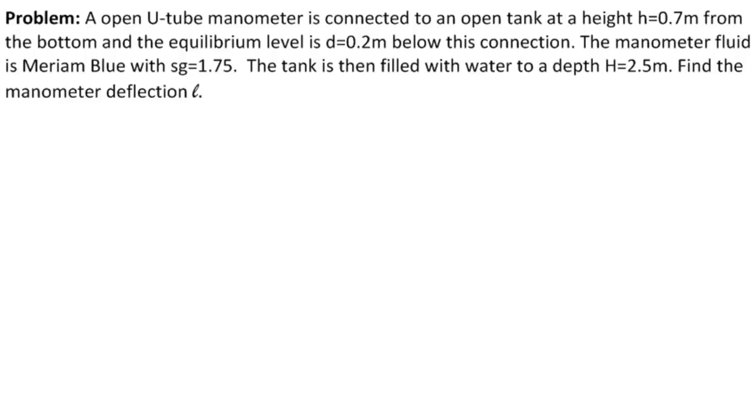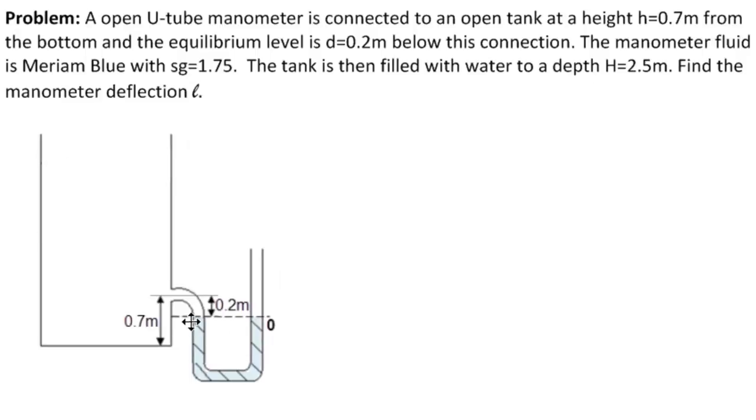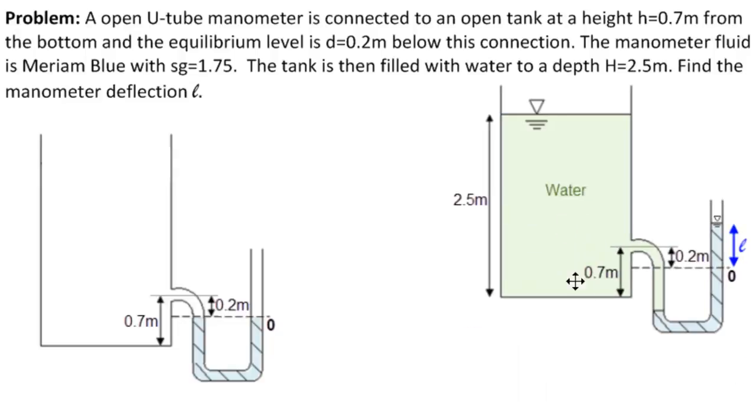So we start with an open tank and a U-tube manometer connected h equal to 0.7 meters from the bottom. And in that U-tube manometer there's Meriam Blue fluid, and its equilibrium level is 0.2 meters below this connection. So what we have is this situation. Here's the tank, open tank. Here's the connection, 0.7 from the bottom. Here's the U-tube manometer. And here's the Meriam Blue fluid in it. And so the zero level is 0.2 meters below this connection here.